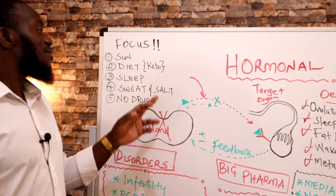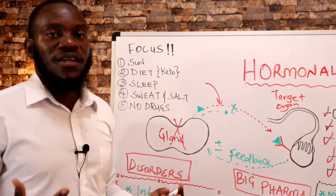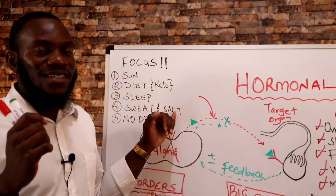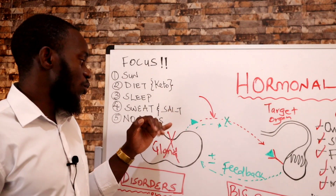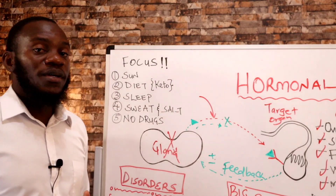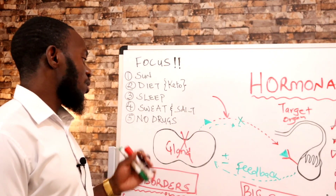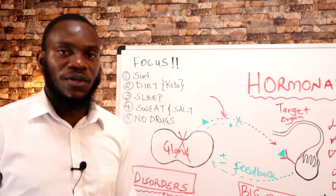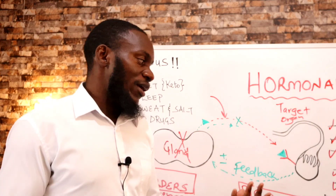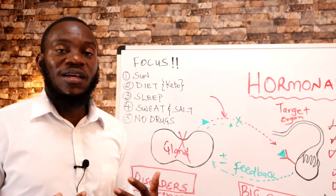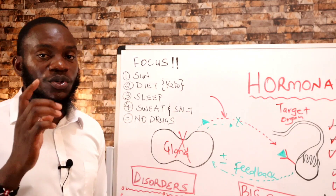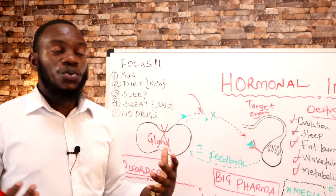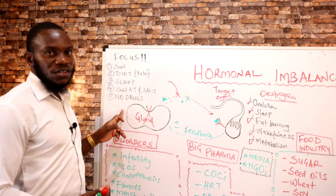Reduce sugar, seed oils, wheat, soy, processed carbs, and GMOs — you must eliminate these for therapy to work. Sleep plays a very major role in stabilizing hormones. Salt is important for women — take your salt whether raw or cooked. Sweating through exercise is important; make sure you lift weights. Finally, avoid hormonal contraceptives — if needed, use the copper IUD instead. Take care of your hormones through appropriate dieting.